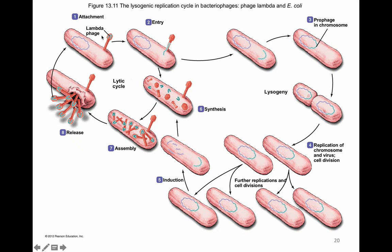Here is an image showing the lysogenic cycle alongside the lytic cycle. With the lysogenic cycle, we have attachment and entry, then the viral DNA is inserted into the chromosome — the viral DNA in blue and the bacterial chromosome in purple. The prophage is inserted and normal replication of the bacteria occurs for many generations, giving us billions of cells with the bacterial chromosome and the prophage being replicated together. Then the process of induction occurs — a DNA-damaging event — and the virus is cut out. We then enter synthesis, assembly, and release.